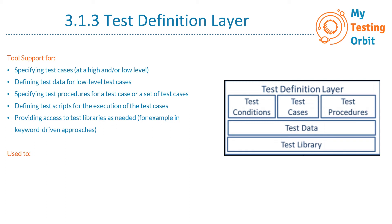The next section covers how to partition, constrain, parameterize, or instantiate test data. Partitioning and constraining test data means splitting data into smaller data sets. Parameterizing test data allows the use of the same test case with multiple data inputs, as the input values are not hardcoded — so instead of writing the same test case again and again for different data values, we can reuse it. Instantiate test data means creating an instance, for example creating a reusable test data class.